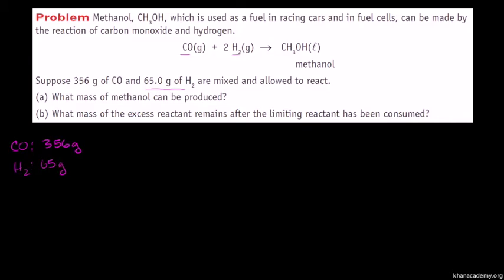But first we have to figure out which is the limiting and which is the excess. And before we even do that, we should always check that our equation is actually balanced. On the left-hand side we have one carbon, and on the right-hand side we also have one carbon. On the left-hand side we have one oxygen, and on the right-hand side we have one oxygen. On the left-hand side we have four hydrogens (2 times 2), and on the right-hand side we have four hydrogens (3 plus 1). So this is balanced.